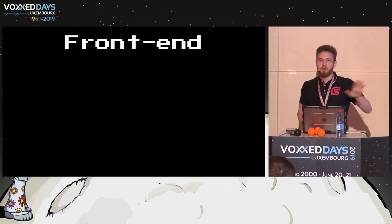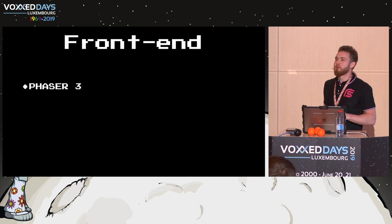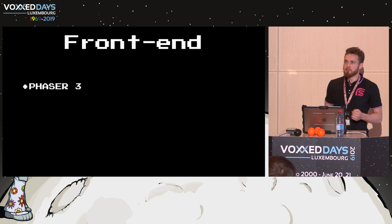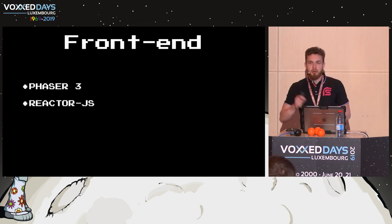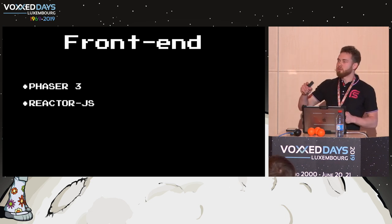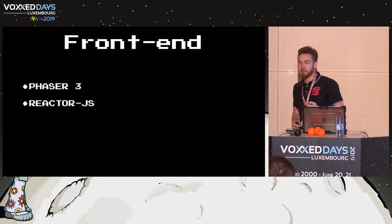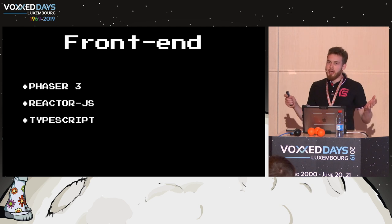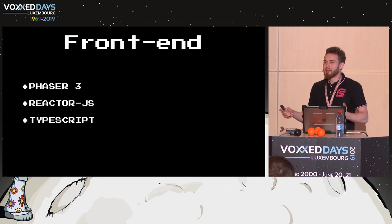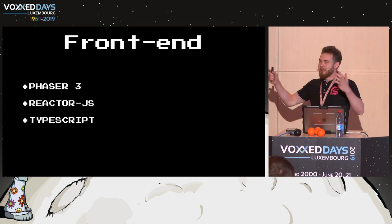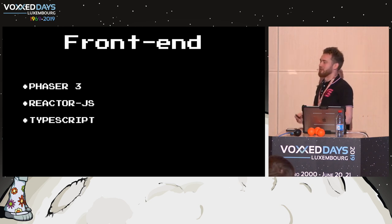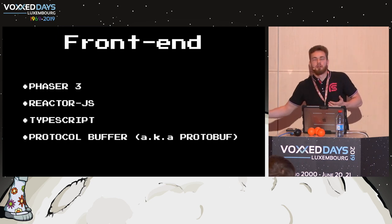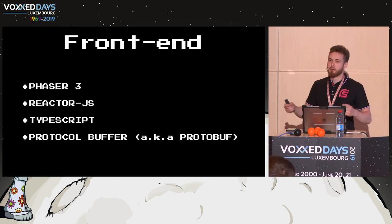On the frontend side, we are using Phaser framework for building the UI and gameplay in the browser. Then we are using Reactor.js for the same reason - performance and cleanness of transformations and data processing. We are using TypeScript because I don't like JavaScript - it's a dynamic language and I'm a Java developer who likes static typing. And finally we are using the same protocol buffer on both frontend and backend to make everything fast.